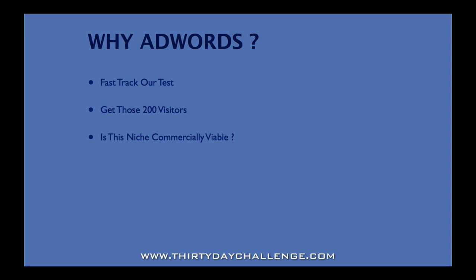Why are we using AdWords at this stage in the 30-day challenge? It's pretty obvious that it actually gets you traffic, but it can actually help fast-track our results. Because obviously, what we're trying to do is get those 200 visitors to see our affiliate offer with, hopefully, at least one person buying. It's that test we're trying to do to ensure that this niche we're targeting is commercially viable. AdWords is a great tool. Yes, it costs money, but it can help us fast-track the results and get to a commercially viable niche a lot quicker.